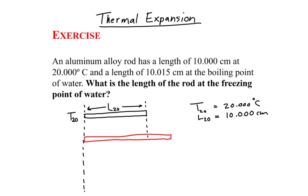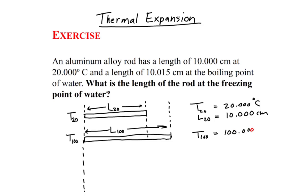The rod lengthens to 10.015 centimeters when it is at the boiling point of water, which is 100 degrees Celsius. We define T100 as the temperature at the boiling point of water, 100 degrees Celsius, and L100 as the length of the rod at 100 degrees Celsius, which is 10.015 centimeters.